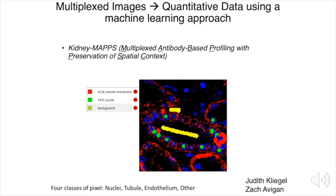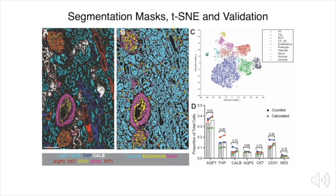We first teach the computer to classify pixels as background, nuclei, tubular cells, endothelial cells, or other cell types, and then to define the borders of each cell. Here's an example of a multiplex image with just 9 of 23 channels shown on a biopsy-sized region from a nephrectomy. Focusing on the boxed area labeled A, Panel A shows the pseudocolored image reconstruction. Panel B is an example of a single-cell segmentation map generated using this approach. We then overlay the raw data from all 23 channels onto the segmentation map using the program Histocat, which is designed for IMC analysis.